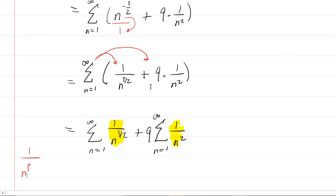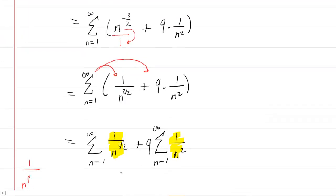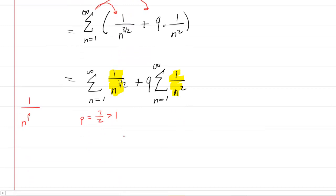Let's go back to the p-series note. We notice that if the p value is greater than 1, then the p-series is convergent. For the first series, p equals 3/2, which is greater than 1. According to the p-series test, we have a convergent p-series.